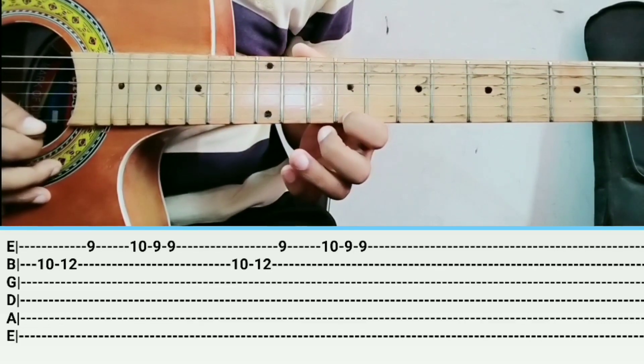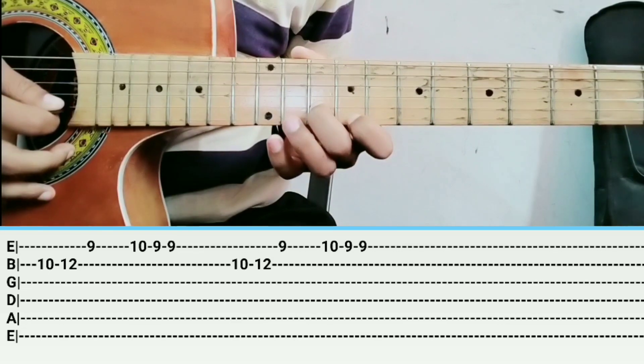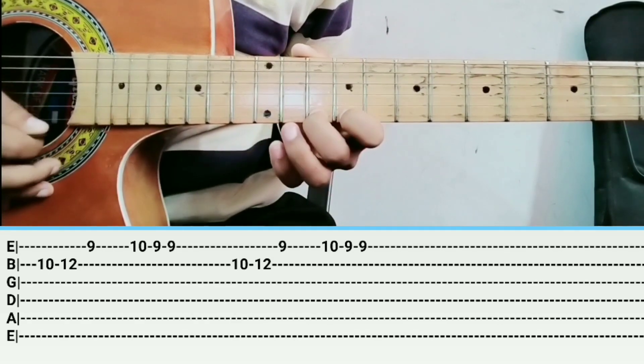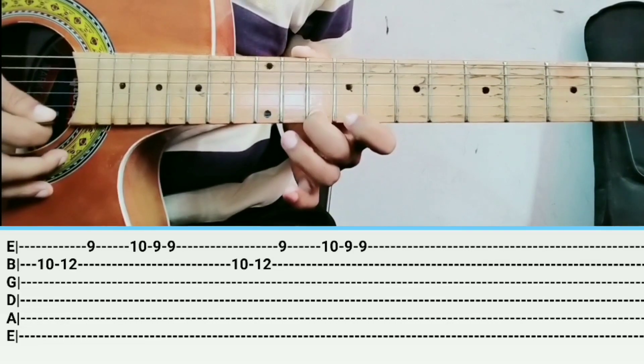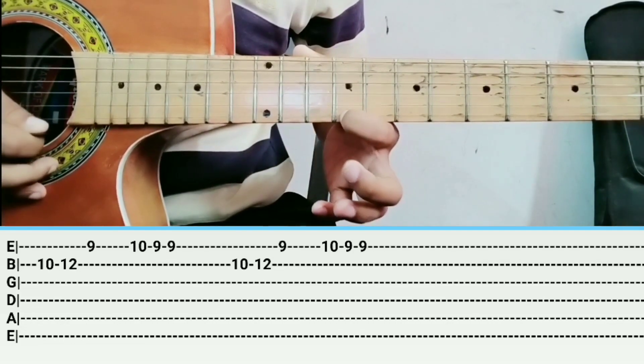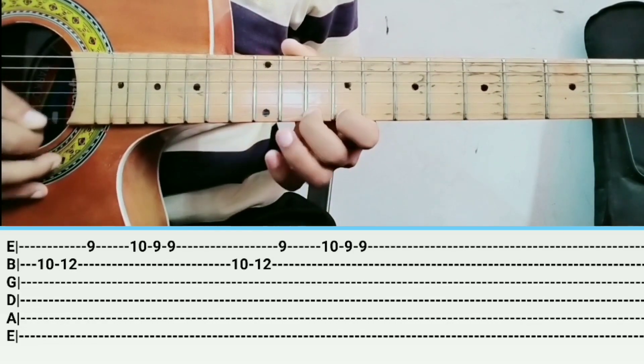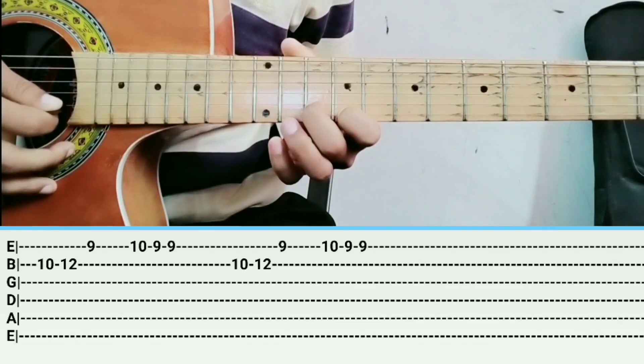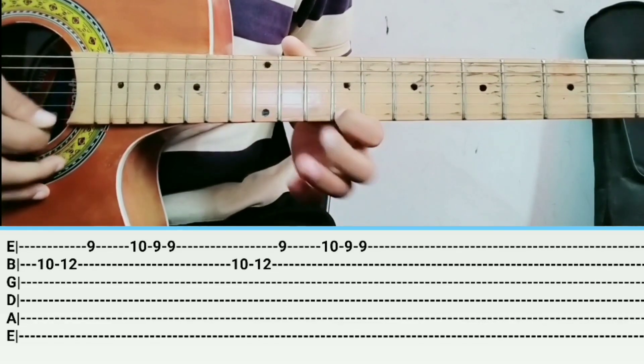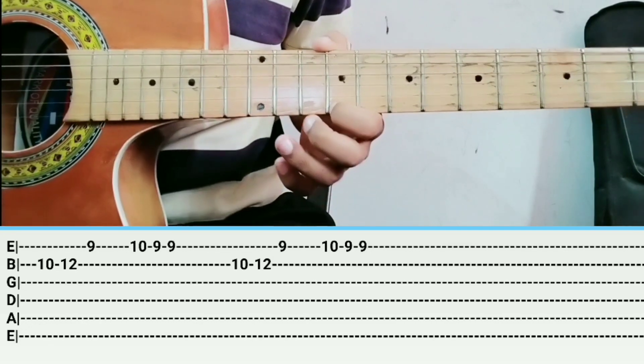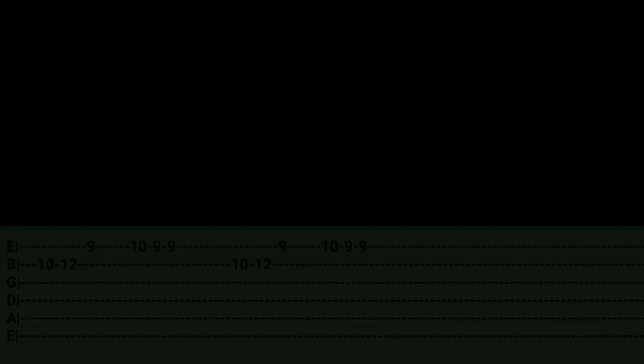10-9-9 is E string, then on the string, then it will be a string, then again then the string, then again, again, again. And then it will be 9-9 the string, then again it'll be a good work.